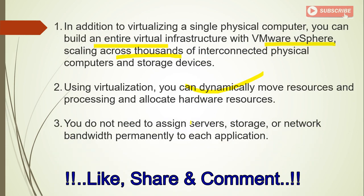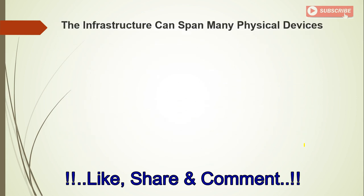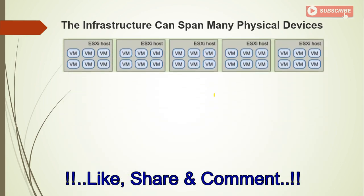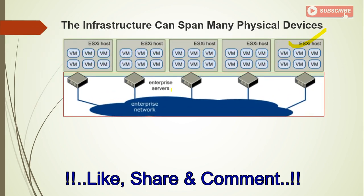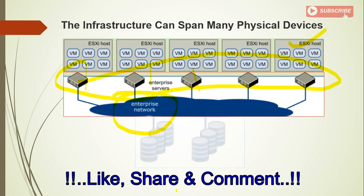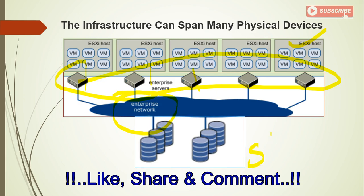You do not need to assign servers, storage, and network bandwidth permanently to each application. The infrastructure can span many physical devices. For example, you can have multiple ESXi hosts, each running multiple virtual machines. You can connect all servers — even if they are in different locations — along with your storage. There is no limitation on connectivity; you can connect your entire enterprise infrastructure.